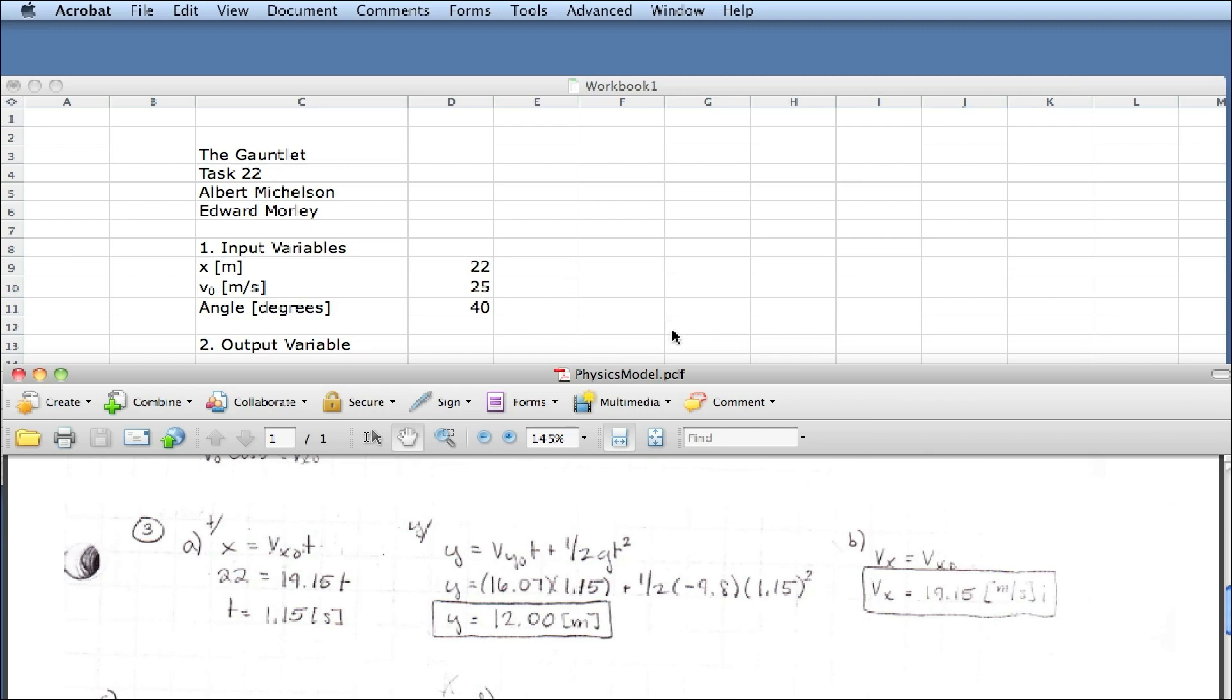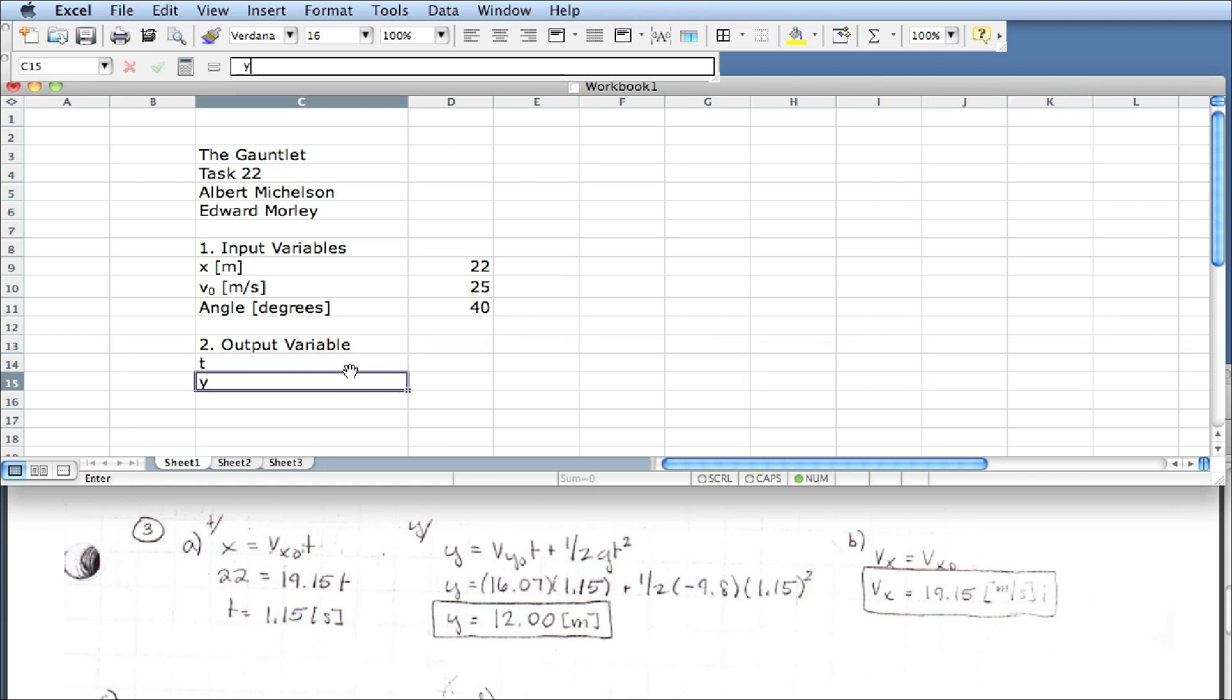So you can see that right there. So it looks like to find time, it was the x variable divided by the x component of the velocity. So I'm going to find time, and then from there I'm going to find y. So this time is equal to, just as you see down here, the x value divided by, now this is 19.15, because that's v0 cosine theta from the side dish. So it's going to be divided by v0, which is 25, times the cosine of theta, cosine parentheses of theta, d11, d11.